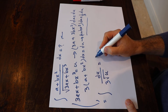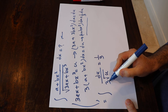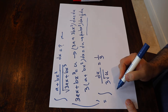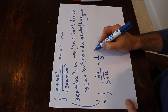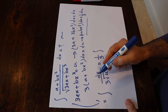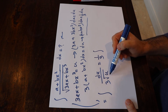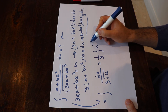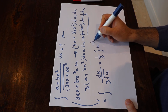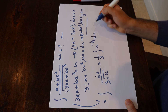So therefore, this integral will be equal to 1 divided by 3 — I can take it outside the integral because it's a constant — times 1 divided by the square root of u, which I can write as u with the power of minus 1/2, times du.